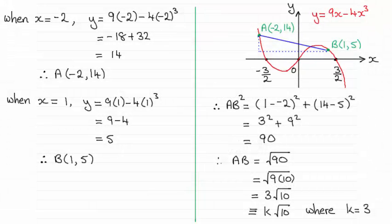Hi. Now for this next part of the question, we were told that we've got two points A and B on the curve C, given by the equation y equals 9x minus 4x cubed.